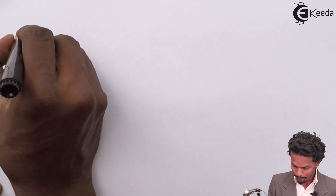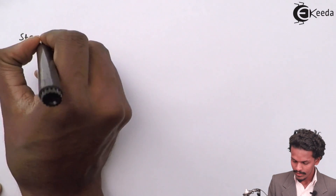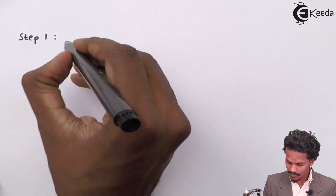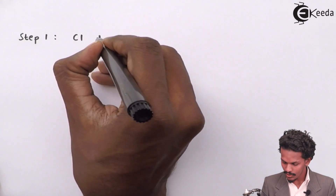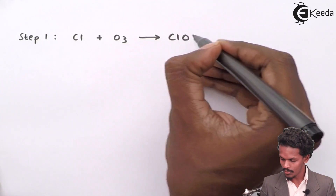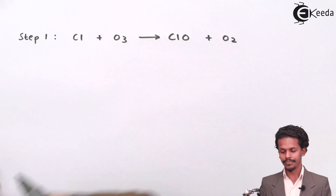To get the overall reaction, we write both steps in sequence so we can treat them as simultaneous equations. Step one: Cl + O3 → ClO + O2.